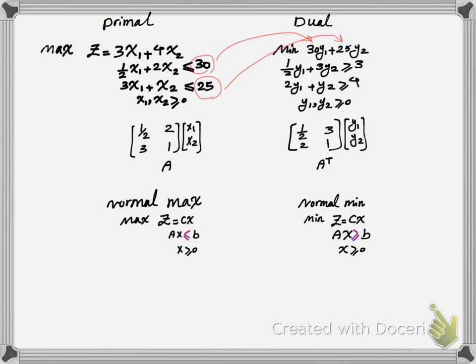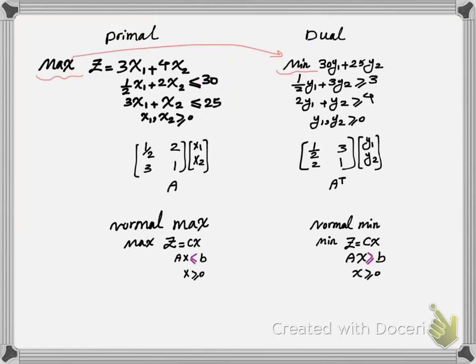In addition your max problem has become a min problem, so if your primal is a max your dual becomes a min. In summary: you have to write the coefficient of the constraints and transpose them to get the coefficients of variables in the constraints of the dual. Max becomes min. Right hand side becomes coefficient of objective function. And coefficient of objective function becomes the right hand side in your dual programming problem. Using this relationship we can write the dual directly given the primal.